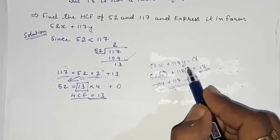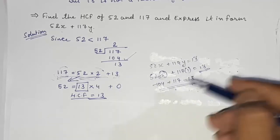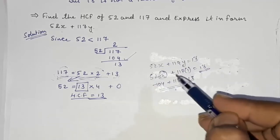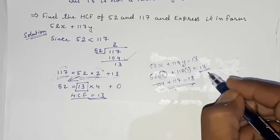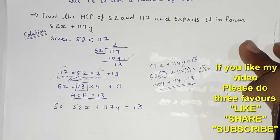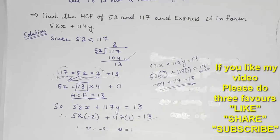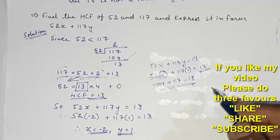From this we get 52 × (−2) + 117 × 1 = 13. You have to use your brain and try different values — whether to take 1, 2, or 3 — and find which combination works. So x = −2 and y = 1. This is how we solve this sum.